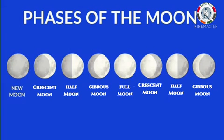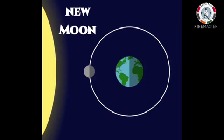The faces of the Moon are: New Moon, Crescent Moon, Half Moon, Gibbous Moon, and Full Moon. When the Moon is between the Sun and the Earth, the side of the Moon that faces the Earth does not get any sunlight. So the Moon is not visible from the Earth. This face of the Moon is known as New Moon. During the New Moon, we cannot see the Moon in the sky.